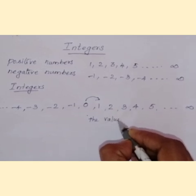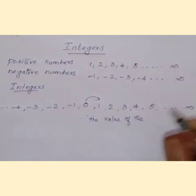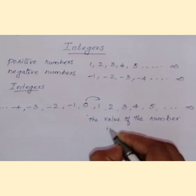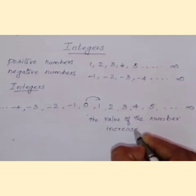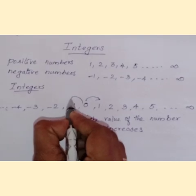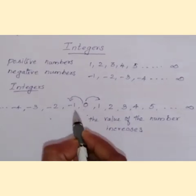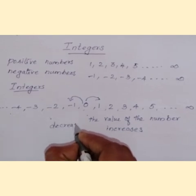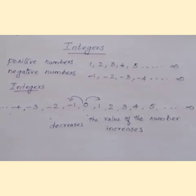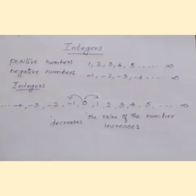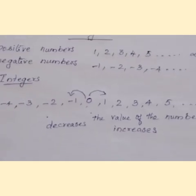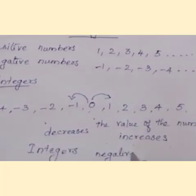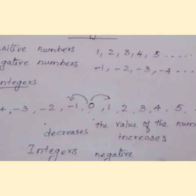And one more thing. Zero and positive numbers, as we move right, the value of the digit increases. Zero and negative numbers, as we move left, the value of the digit decreases. That is, minus 1, minus 2, minus 3, minus 4, minus 5. As we go this way, minus 1 will be the bigger number. So the value of the digit decreases as it moves to the left side. That is the important one.